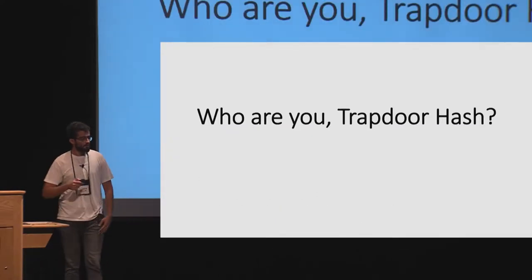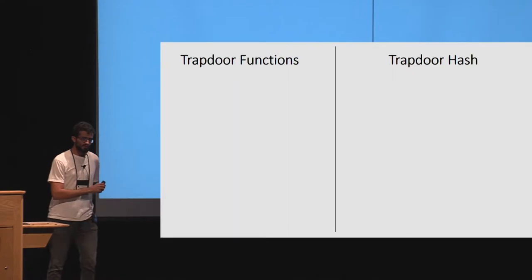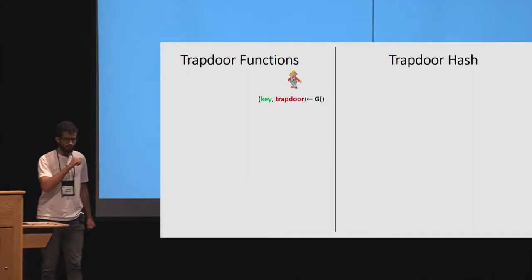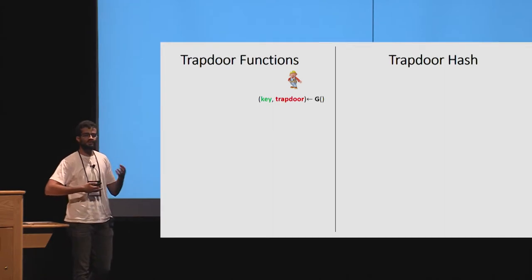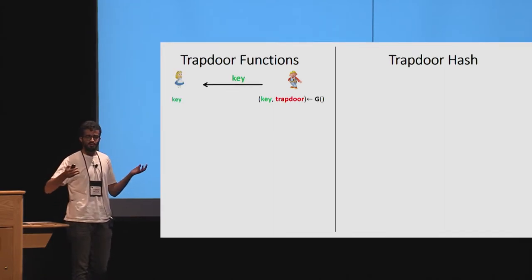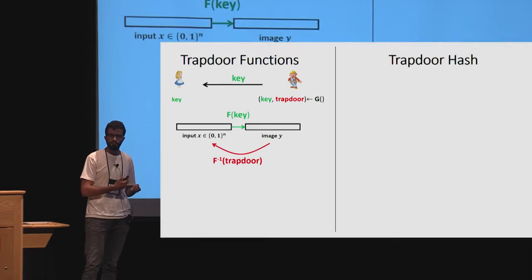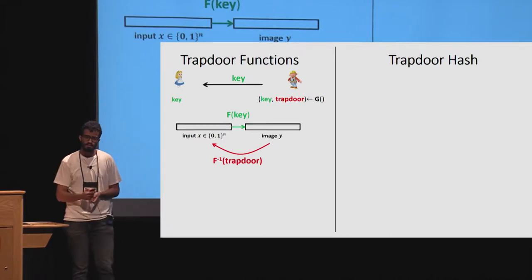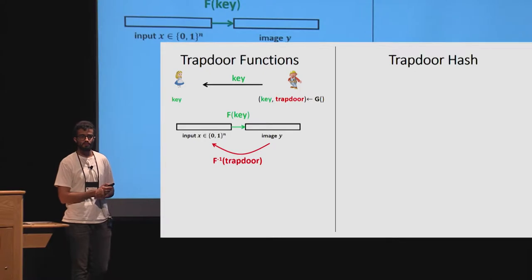Now let's talk about trapdoor hash itself. To define it, I'll start with trapdoor functions that we all know. Trapdoor functions allow Bob to generate a key-trapdoor pair, publish the key, and send it to Alice. Given the key, Alice can evaluate the trapdoor function on her input x and get some image y. Only Bob, who has the trapdoor, can invert y back to x — using the key you evaluate the function, using the trapdoor you invert it.